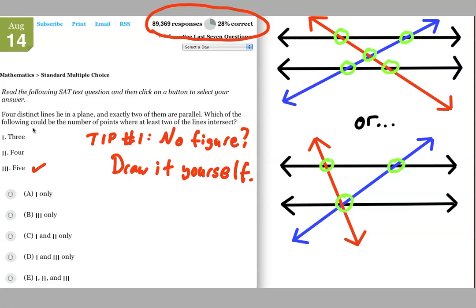Now, I also notice, however, that the question says which of the following could be the number of points where at least two of the lines intersect. And so, if I see the word could, I think to myself that there's more than one possible answer.